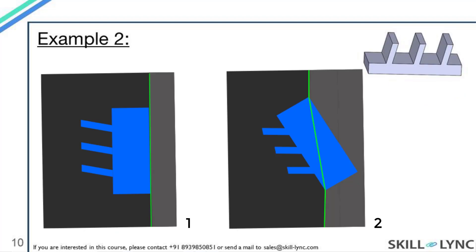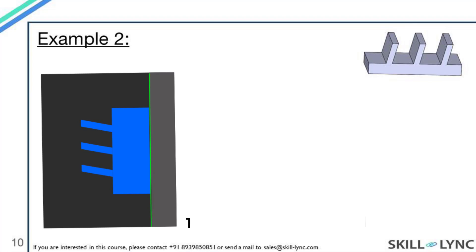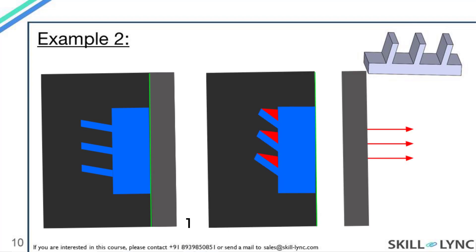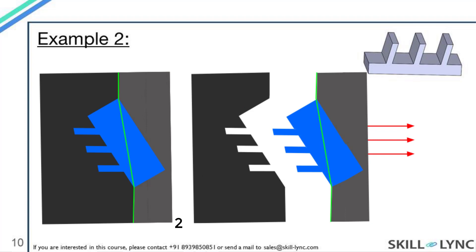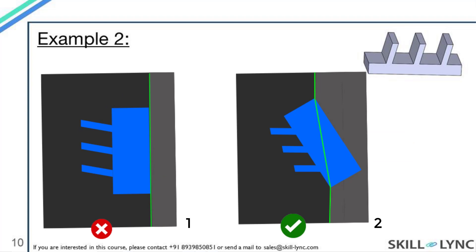Now here we have a case showing where the angled parting surface would be more preferable. You can see the example component on the top right. First, let's look at the left case where a straight parting surface was used. The parting surface was selected along the flat base of the component. But once the material is injected and solidified, if we try to remove the part from the mold, it won't be possible due to undercuts indicated by the red color. Now in the second case, an angled parting surface is selected, and you can see that there are no undercuts present now and the part can be easily ejected from the mold. Since the machining of straight parting surfaces is easier, we try to avoid other types if possible. But in this case, use of angled parting surface helps us avoid undercuts which cannot be achieved using the straight parting surface. So for this specific model, use of angled parting surface is the preferred method.